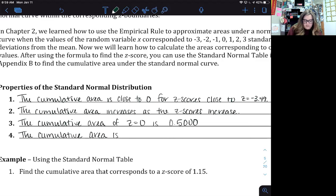And then the cumulative area is close to one for z scores close to z equals a positive 3.49 or anything greater.